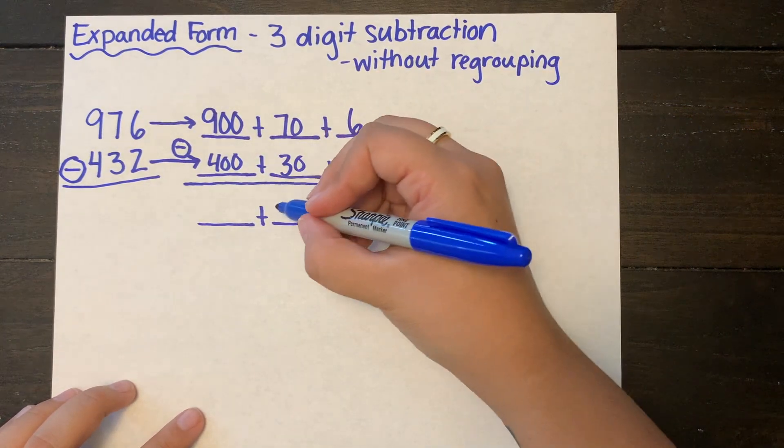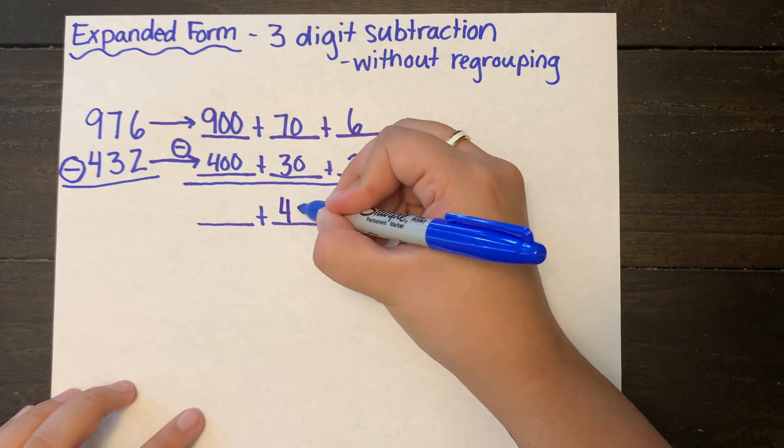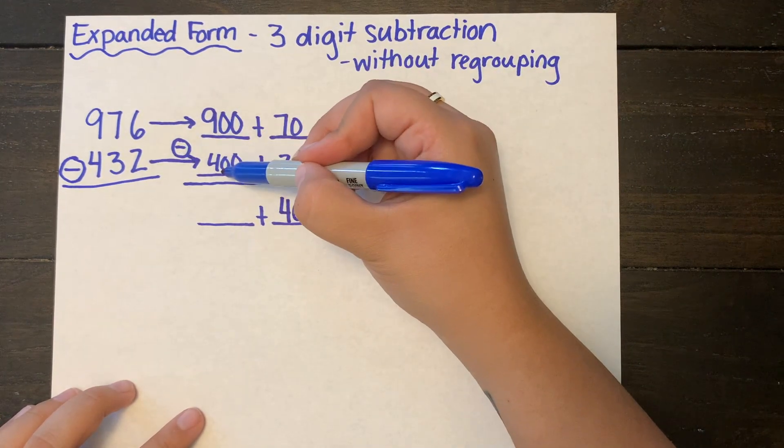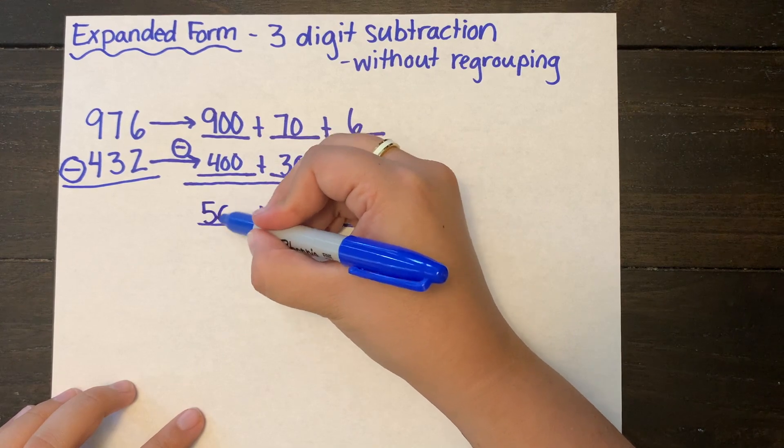Then I'm moving on to my tens column. 70 take away 30 is 40. And my hundreds column. 900 take away 400 is 500.